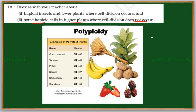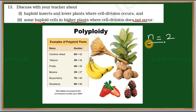We need to discuss haploid cells in higher plants where cell division does not occur. Haploid cells are represented by n — they have only one set of chromosomes. For example, if the number of chromosomes in a haploid cell is 2, then n equals 2. If it is diploid, there are two copies of each chromosome.